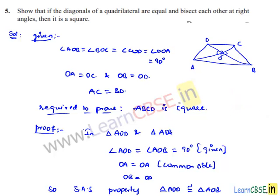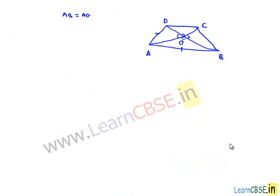The corresponding sides will be equal, so here we can equate AB is equal to AD. We got AB is equal to AD — let us name it as equation number one.